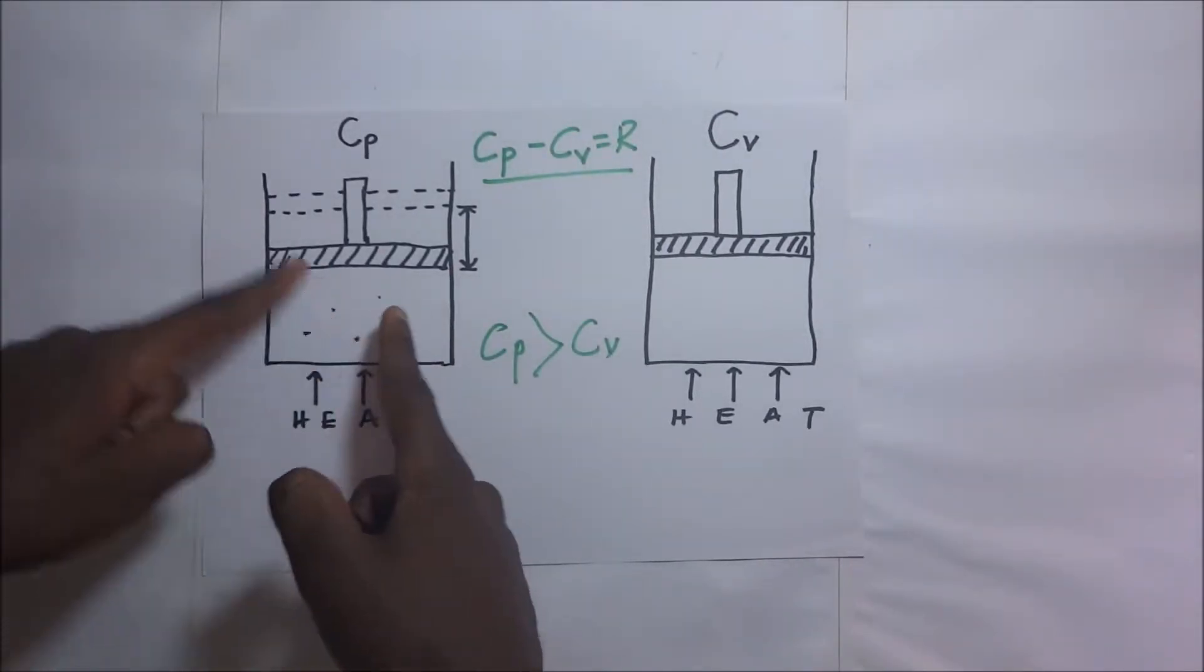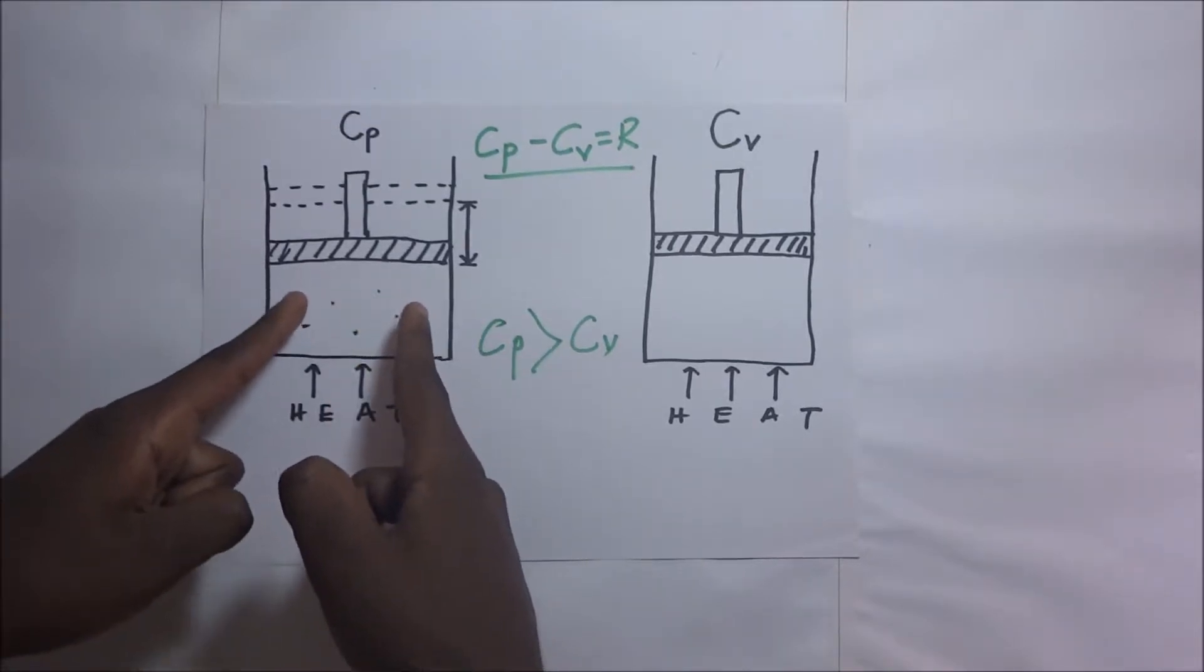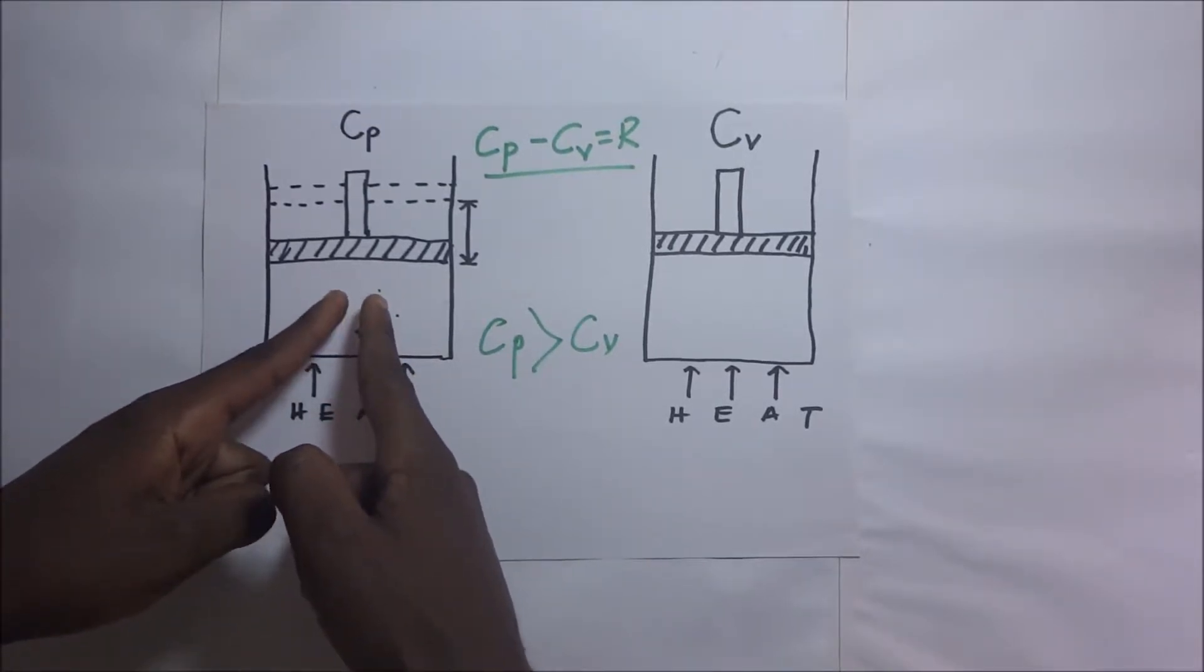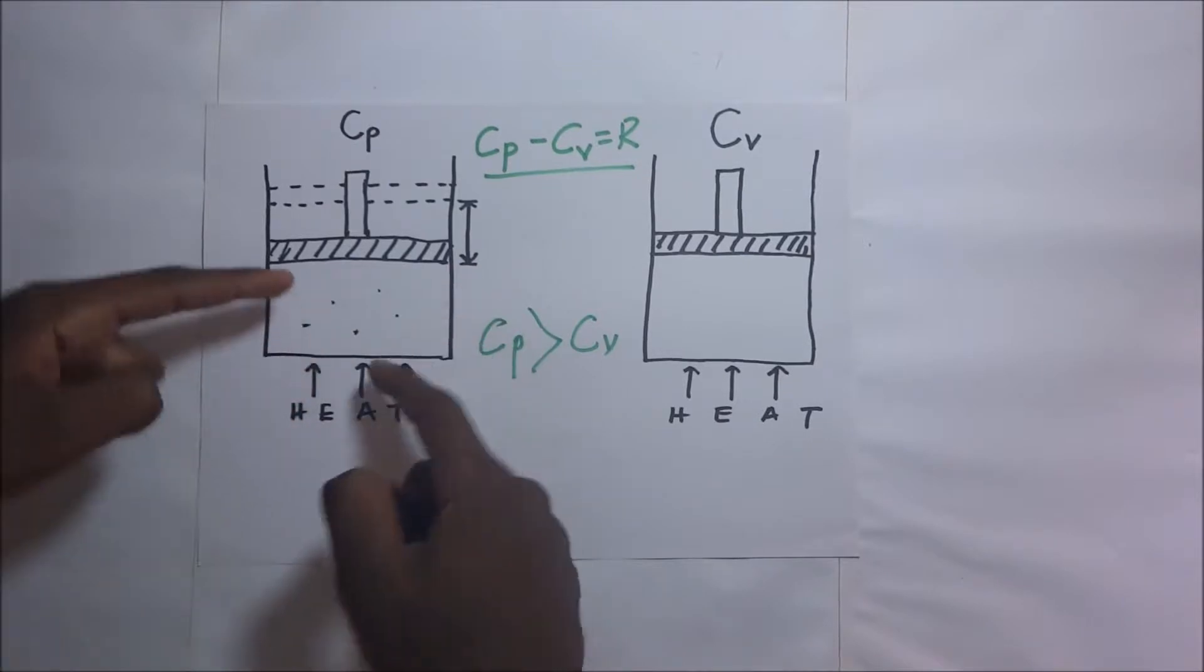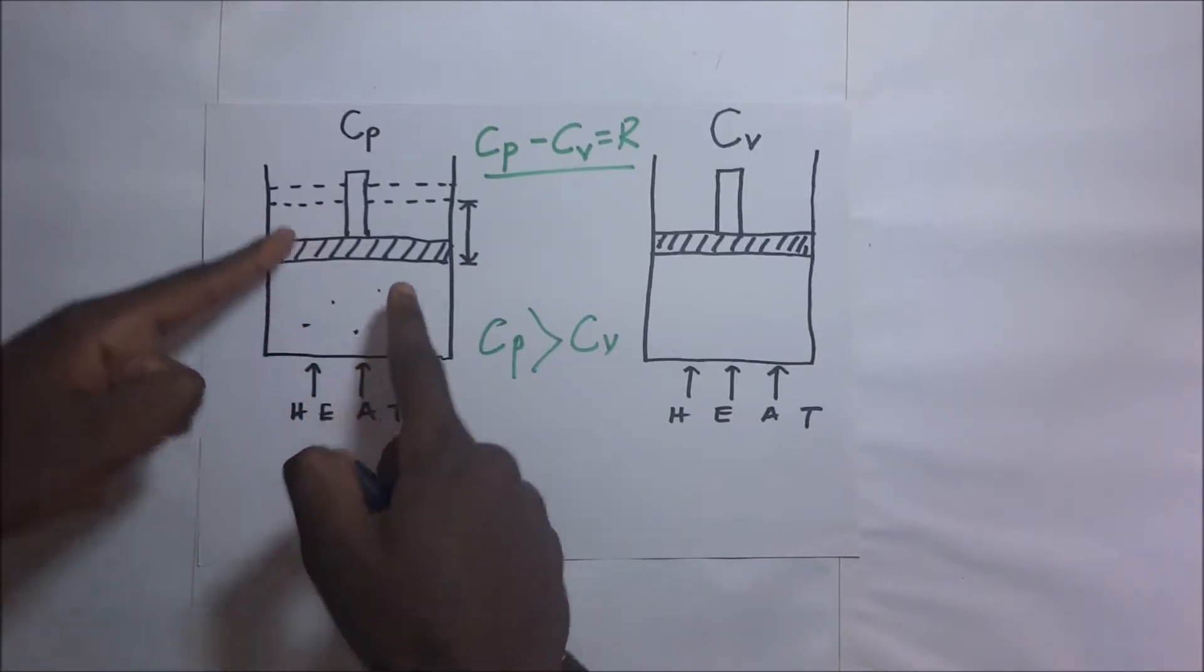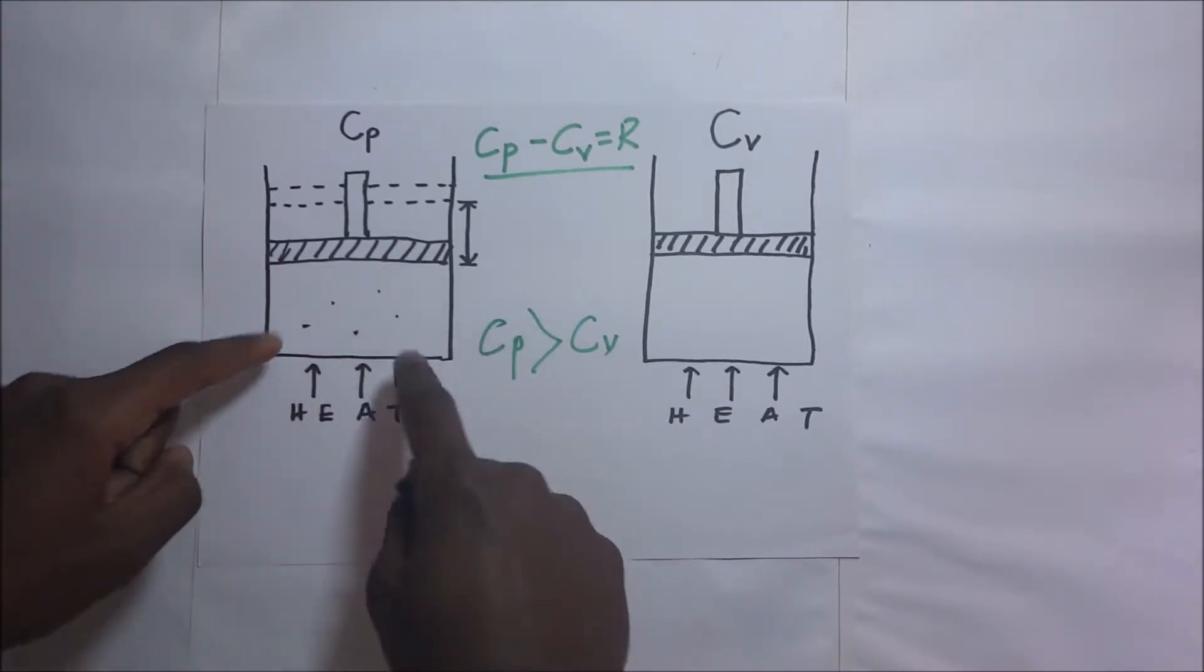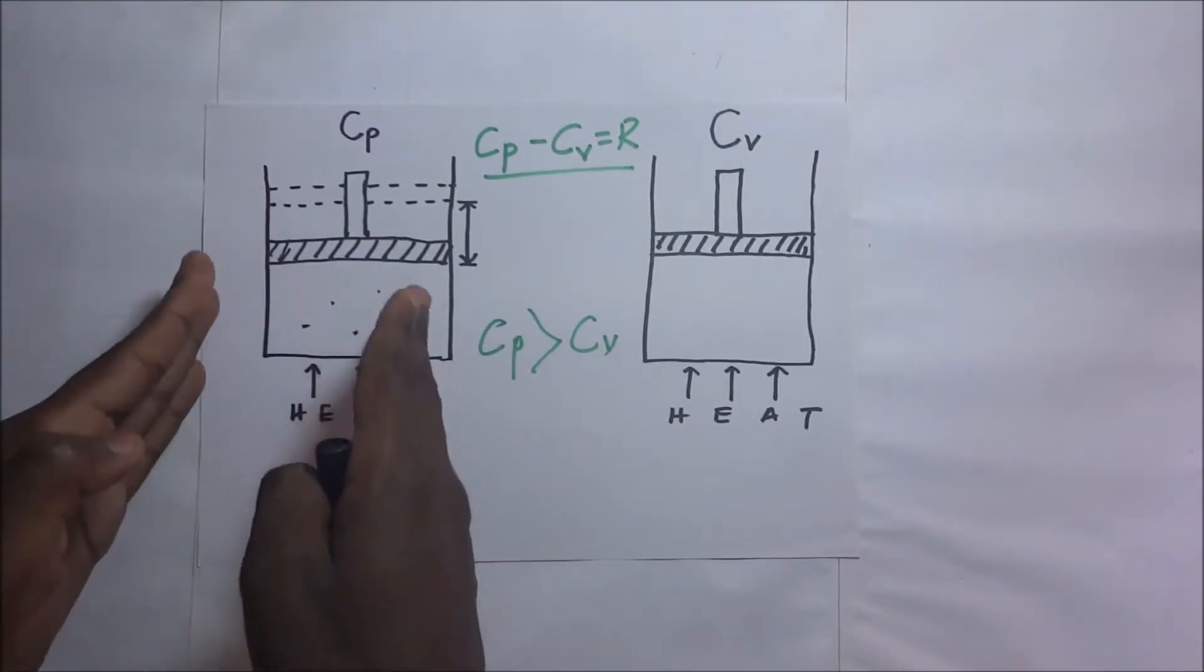And as it's expanding, its pressure increases because of the kinetic energy increasing as well. So as its pressure tends to want to increase, this piston is pushed up so that it compensates for that increase. It accommodates that pending increase so that it keeps this system at a constant pressure.